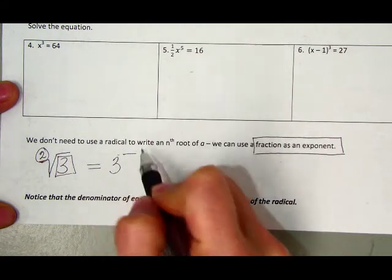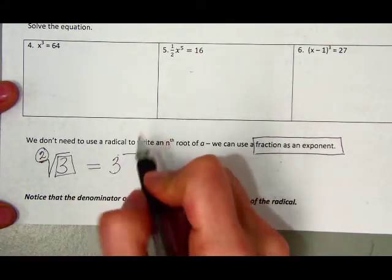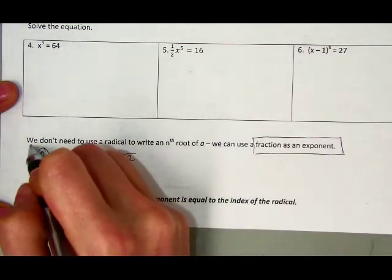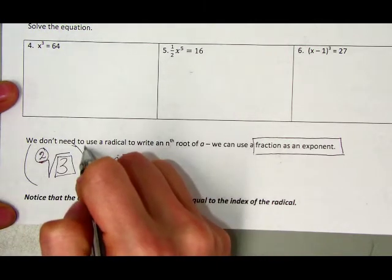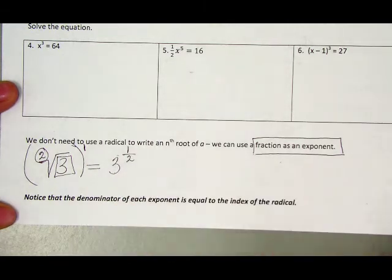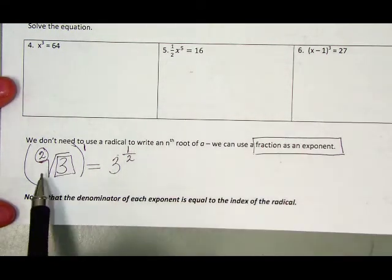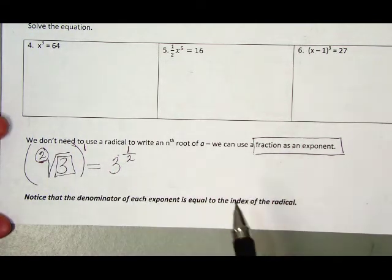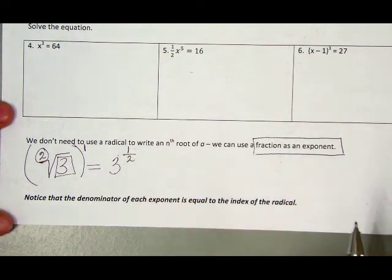And then in our exponent, we're going to have a fraction. Your fraction will always have your index as the denominator, and the number that is the whole value being raised to that first power, since we're not changing anything, the 1 goes up on top. So we can always write our radicand or our radical values, our radical numbers, as exponential numbers with fractions as our exponents.